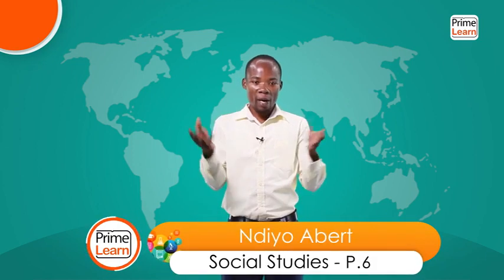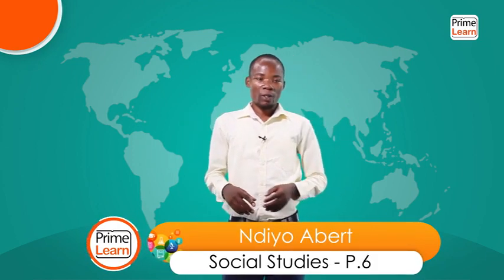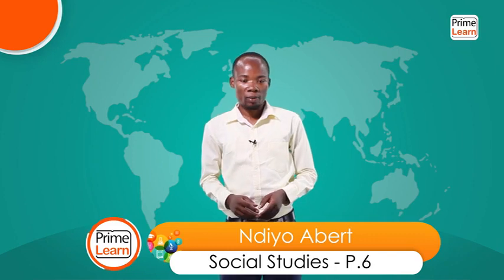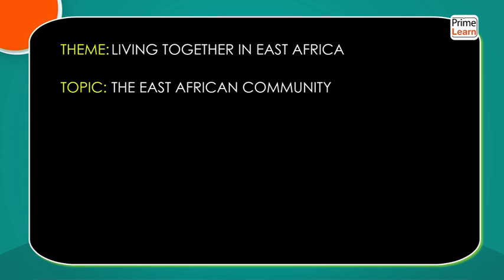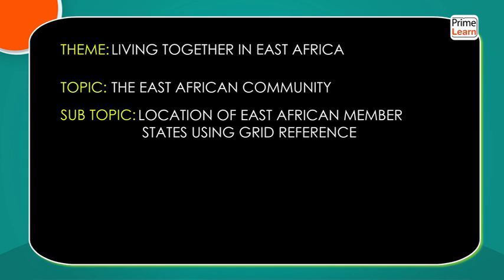Hello, my dear learner. My name is Teacher Ndiyo Abati. I am going to take you through Social Studies Primary 6 class. Our theme is 'Living Together in East Africa.' Our topic is the East African Community. The sub-topic is the location of East African Community member states using grid reference. This is lesson number 1.